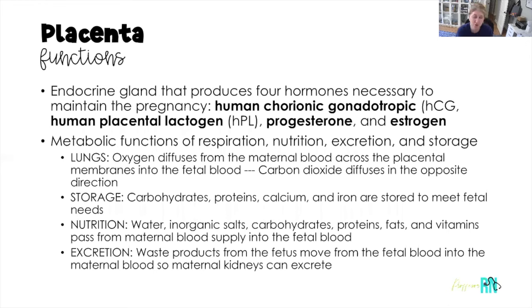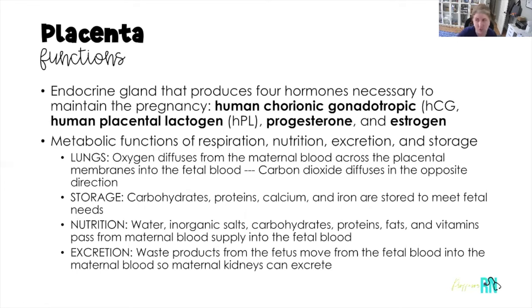The placenta functions as an endocrine gland and produces four hormones. Remember, the placenta isn't fully functioning until week 12. At around week 12, the placenta produces estrogen and progesterone in large amounts to support the pregnancy, along with human chorionic gonadotropin (HCG) and human placental lactogen (HPL). The placenta also acts as the lungs for the baby — oxygen diffuses from mom's blood across the placenta into fetal blood, and carbon dioxide flows in the opposite direction. The placenta also stores carbohydrates, proteins, calcium, and iron for the baby's needs.